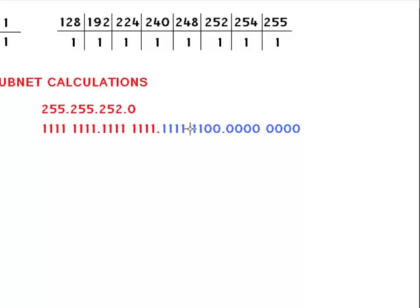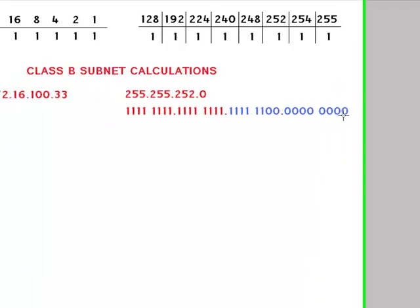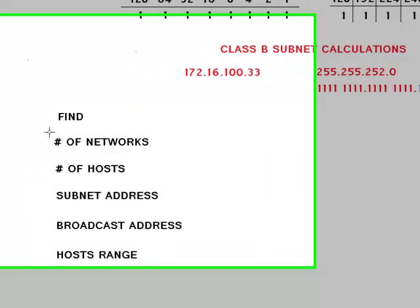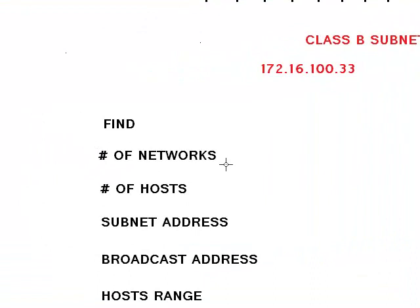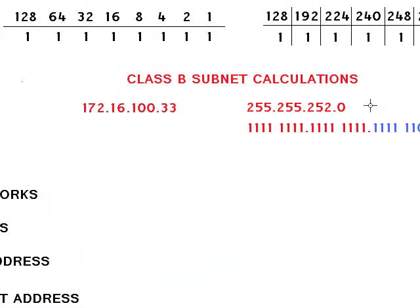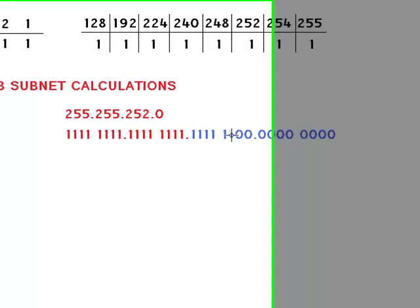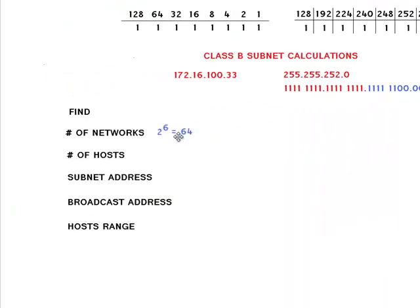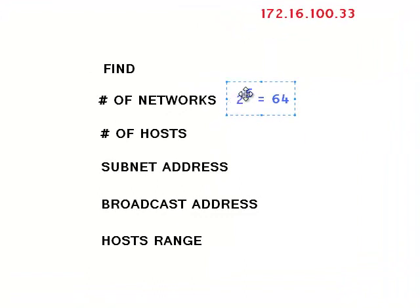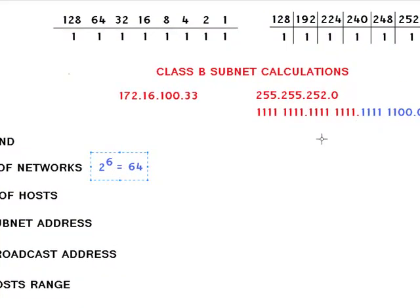So when you want to know how many networks and hosts are available using a mask like 252.0, you start from the third octet. To find the number of networks — like in my previous class C video — you count how many ones are in the mask. We count: one, two, three, four, five, six. We have six ones, so two to the power of six gives us 64 networks.